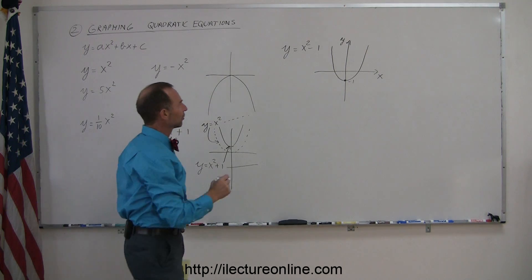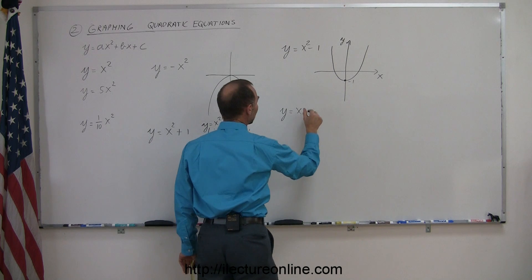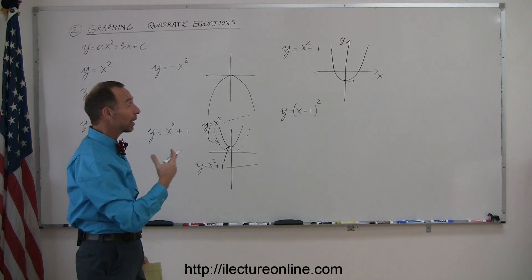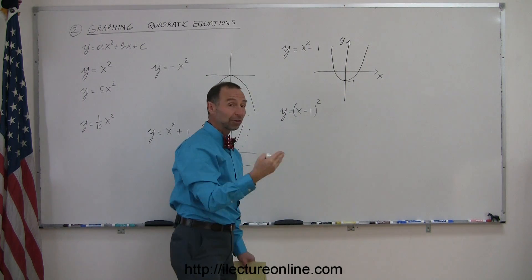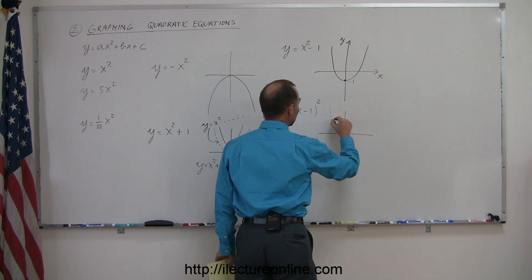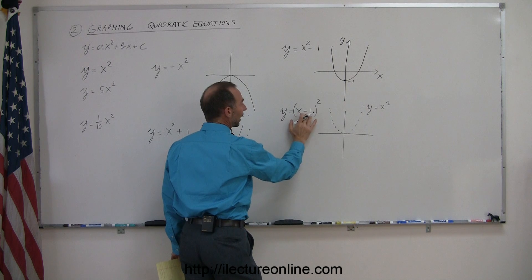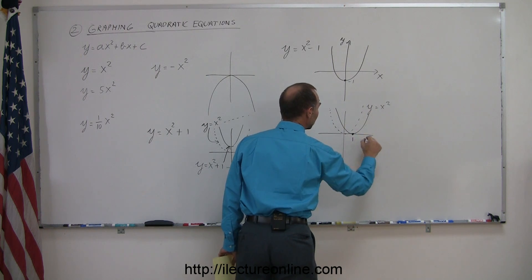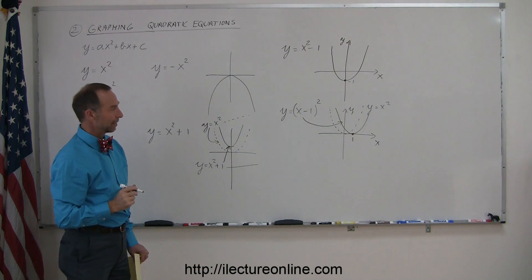What if you had y equals the quantity x minus one squared? That would shift the parabola left or right. In the case of a minus, it would shift the parabola to the right; in the case of a plus, it would shift to the left. So for y equals the quantity x minus one squared, the vertex would now be at x equals one, shifted to the right by one.